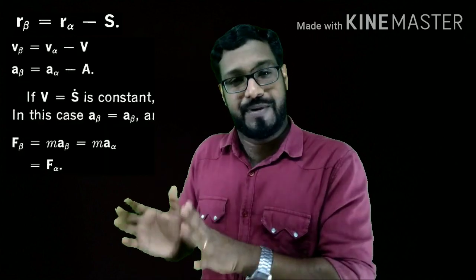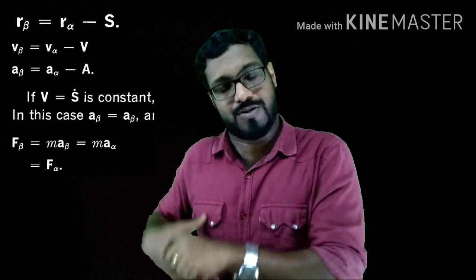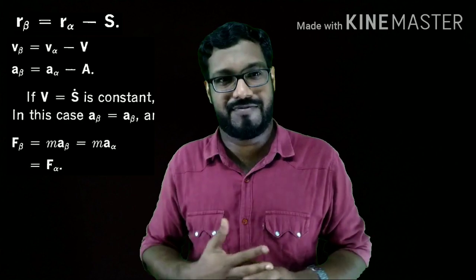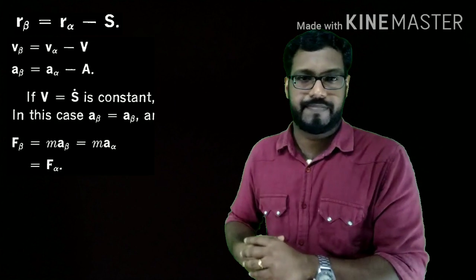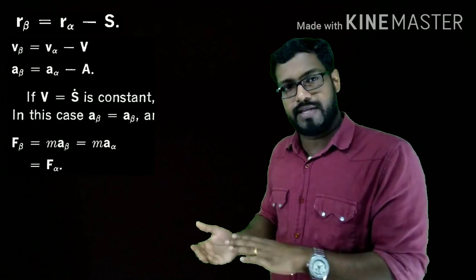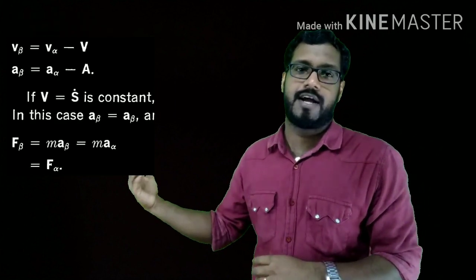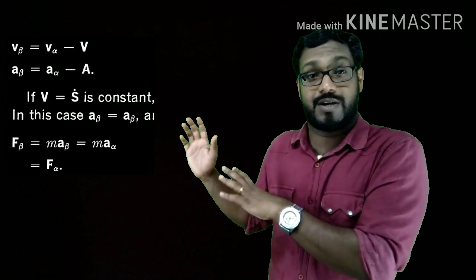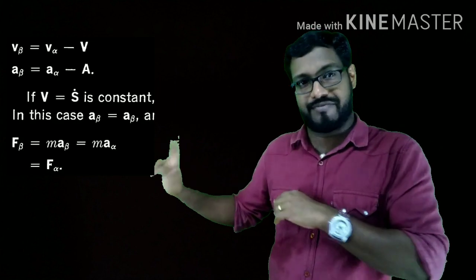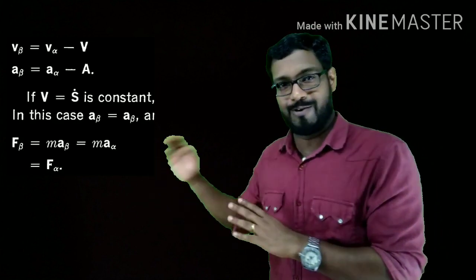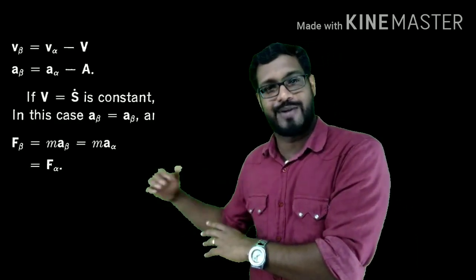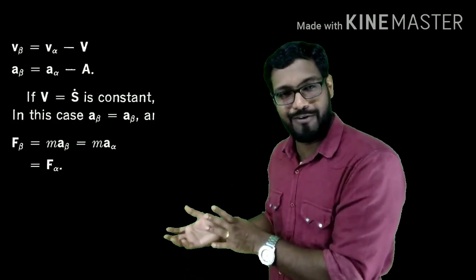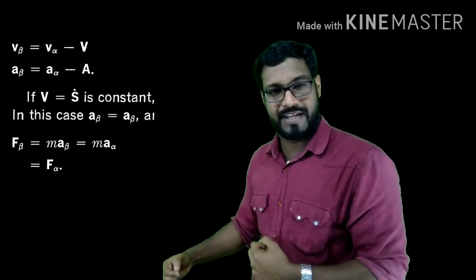Starting from R_beta = R_alpha − S, taking the first derivative gives V_beta = V_alpha − V, where V_beta is the velocity of the particle in beta's frame, V_alpha is the velocity of the particle in alpha's frame, and capital V is ds/dt. Taking one more time derivative gives a_beta = a_alpha − 0. It is zero because beta's frame is moving with a constant velocity V with respect to alpha's frame, meaning capital V is constant and its time derivative is zero.